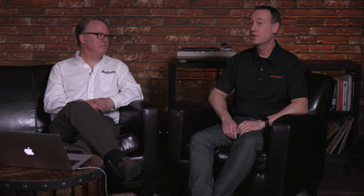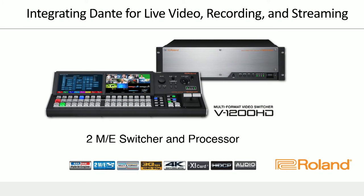That's a great overview of how to connect Dante to our M5000 and to the V1200. Next I'm going to talk about the V1200 and specifically some workflows and Dante into the V1200. The V1200 is a 2ME switcher and processor. That allows you to have one ME for mixing for the event space and one ME mixing for, let's say, a broadcast, record, or web stream.